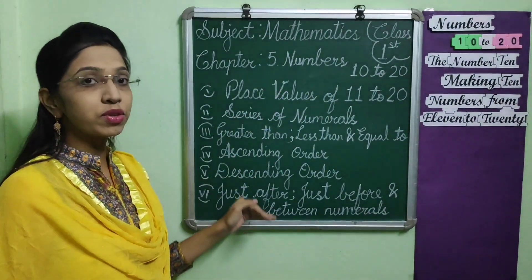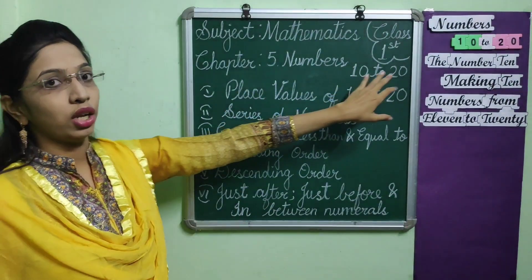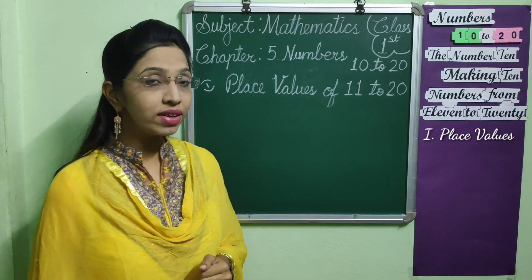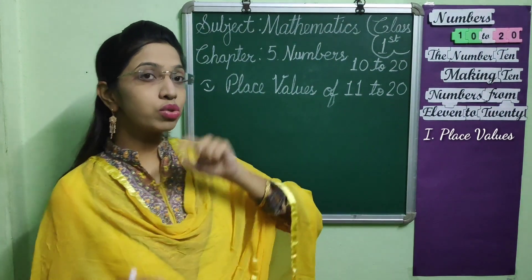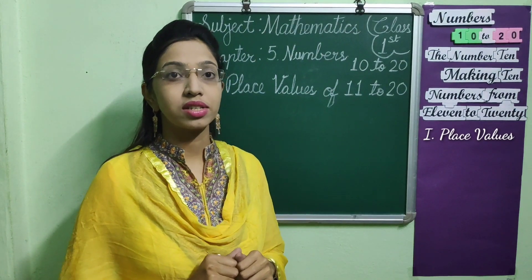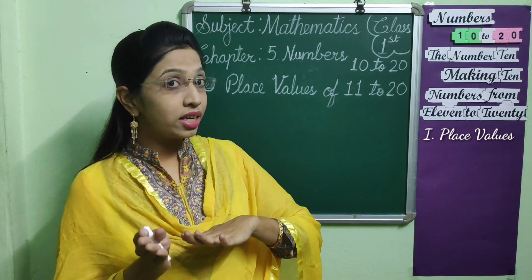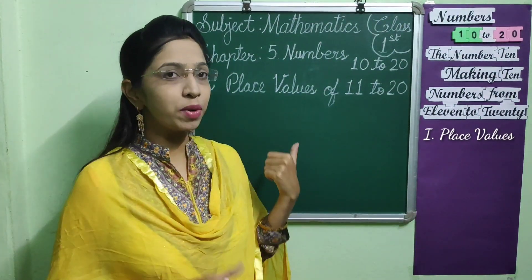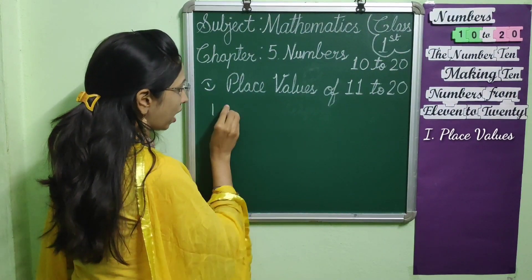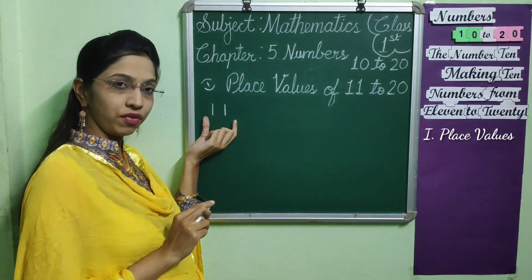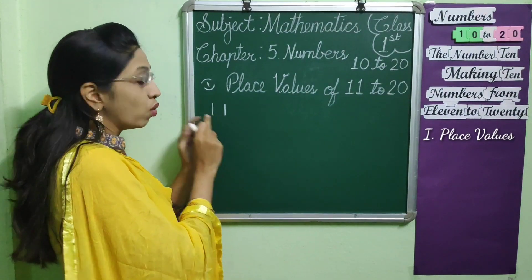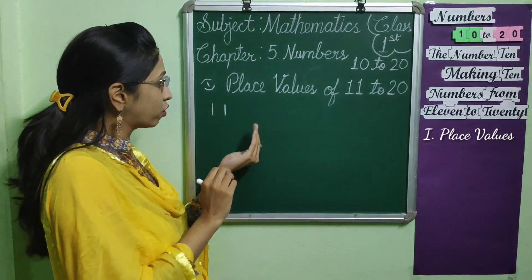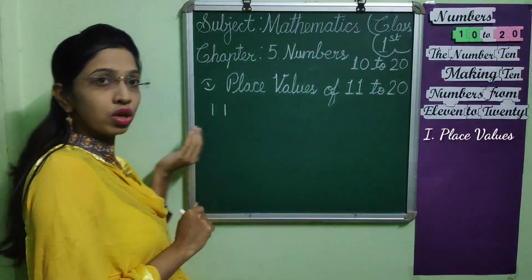These all concepts will be in numbers between 10 to 20. Let us start with the first topic, place values. As I told you in the previous class, children, 0 to 9 are one digit numbers and 10 to 20 are two digit numbers. Here I will explain you with the first number. Let us take number 11. In the number 11, the place value — always remember — whenever we will write place value, we have to start from right to left.